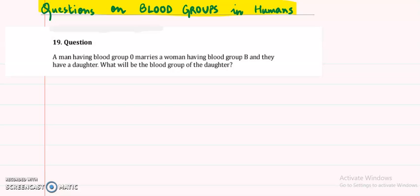Hello students, welcome to my channel Online Biology Tutorials. In this video we will take a few problems related to human blood groups. The first problem is: a man has blood group O and the woman has blood group B, and they have a daughter. What would be the blood group of the daughter?